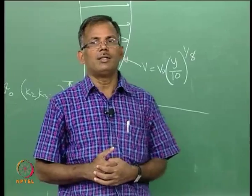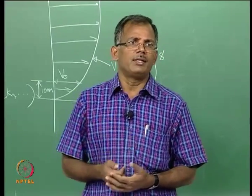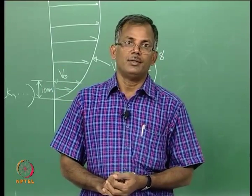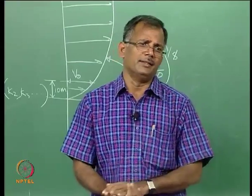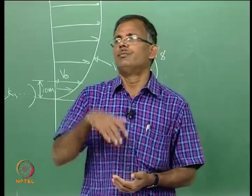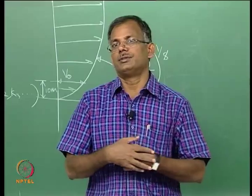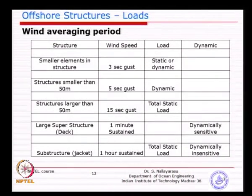That is why the calculation of velocity has to be correct and accurately predicted. Fortunately, in offshore structures, we do not have too much height — maximum could be about 100 meters. Whereas for land-based structures, towers and buildings nowadays go as much as hundreds of meters, so velocity becomes considerably more important in those cases.